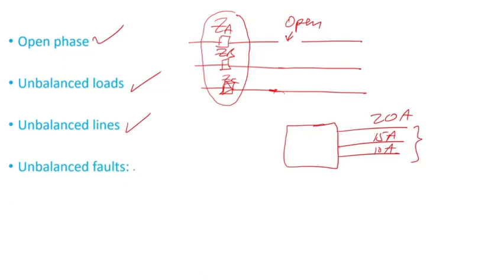Unbalanced faults. What are unbalanced faults? Like a line to ground, you have one phase faulting to ground. Line to ground, or line to line to ground, or just line to line.